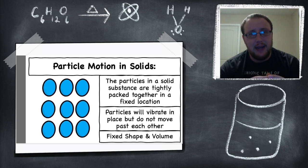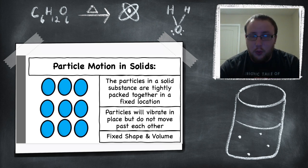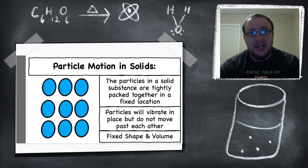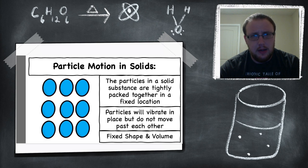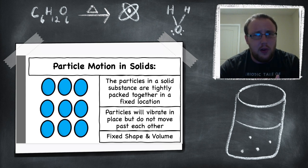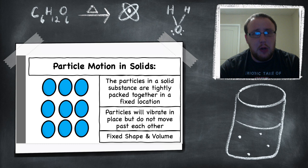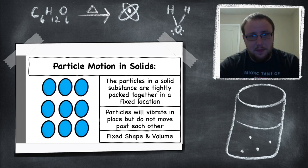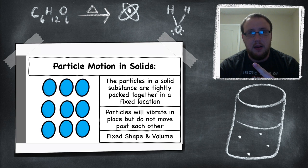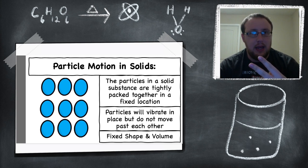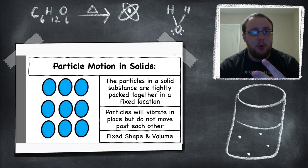Because these particles are so tightly packed together and they don't want to move past each other, that gives the object a shape. Because these particles are also rigid and not free-moving, they're going to have a specific or fixed volume. So solids: particles are tightly bound together, they vibrate, and they have a fixed shape and volume.